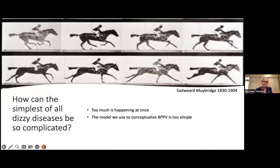Edward Muybridge was a photographer in Britain who developed a method of motion capture that unlocked physical phenomena that were happening just too rapidly or too simultaneously for us to fully understand. His images of horses running, men walking, and people sitting up really enhanced the study not just for art, but for medicine. It is this same kind of problem that explains why the simplest of all dizzy diseases is so complicated — there are often too many things happening at once, and the model we use doesn't always acknowledge what we are seeing in the clinic.